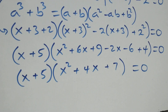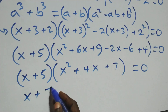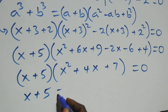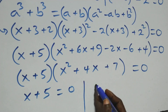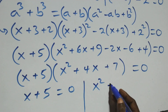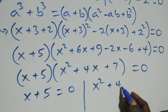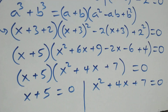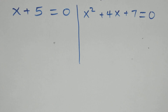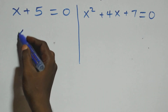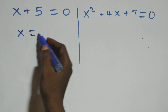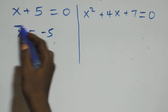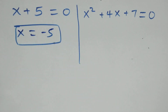At this, we have two possible cases here: x plus 5 equals to 0, or we have x squared plus 4x plus 7 equals to 0 here. Then solving on this side, this gives us x equals to minus 5, which is a real solution here.